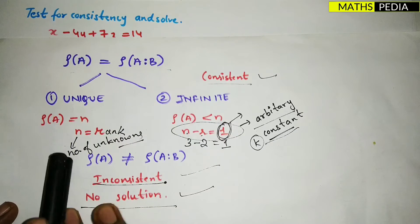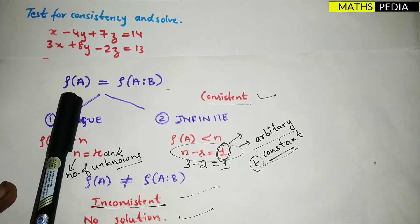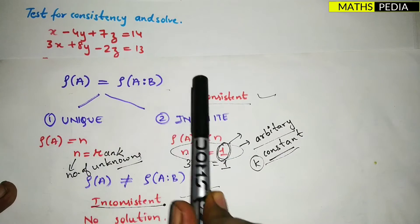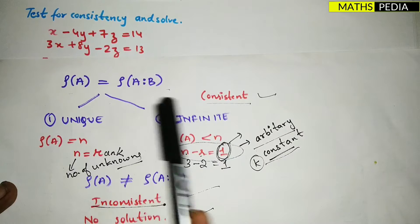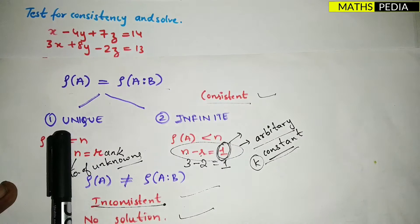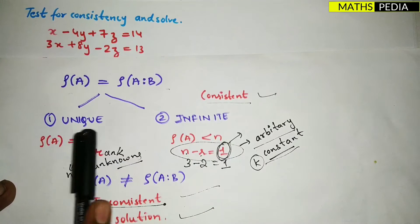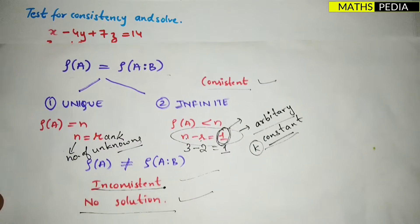Here we discussed the conditions: rank should be equal to augmented rank. If it is equal, then it is consistent and we have to check whether it has a unique solution or infinitely many solutions. For that you have to see the number of unknowns. If it is equal, then it has a unique solution.